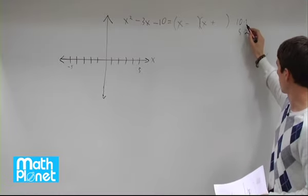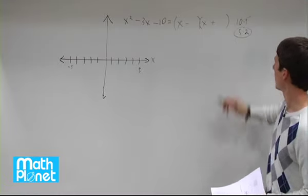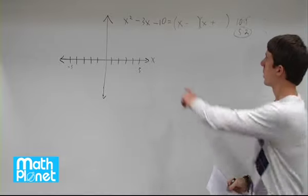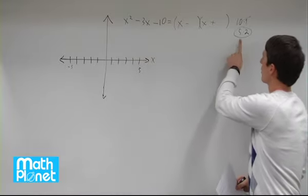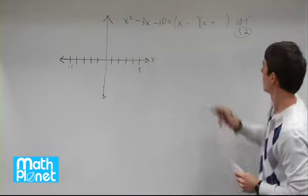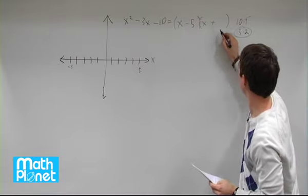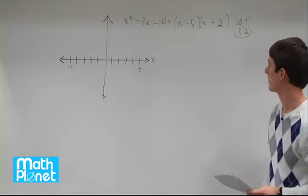Obviously, the 10 and the 1 aren't going to work, but the 5 and the 2 are. So which one is going to be negative? It's a negative number, so the larger one has to go with the negative. So we put a negative 5 in here and a positive 2 in here.